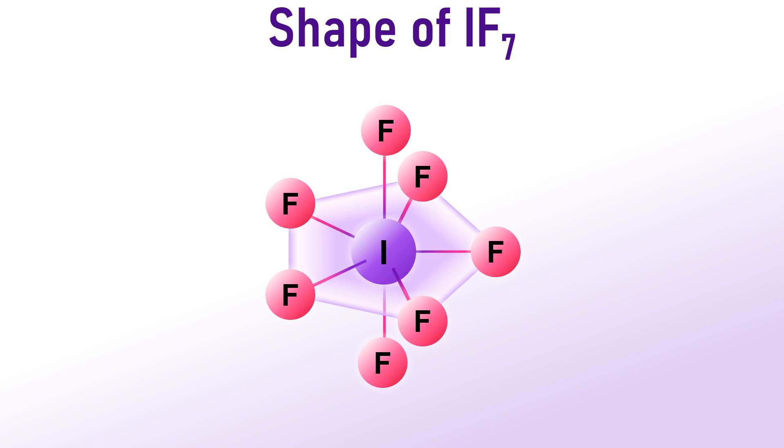Consequently, 7 fluorine atoms form 7 bonds with the iodine atom in a pentagonal bi-pyramidal geometry. The bond angles between equatorial I-F bonds in the pentagonal plane measure 72 degrees, while the bond angle between the axial I-F bond and the equatorial I-F bond is 90 degrees.